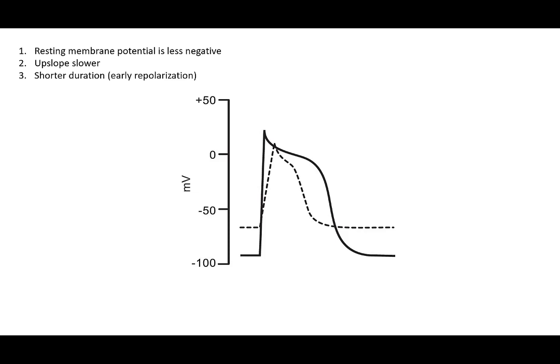To begin with the action potential changes, there are three main issues. The resting membrane potential in the ischemic cell is less negative. Then the upslope or depolarization phase is slower. Then repolarization occurs sooner, so the overall duration of the action potential is shorter.